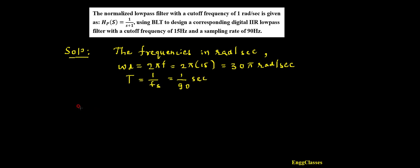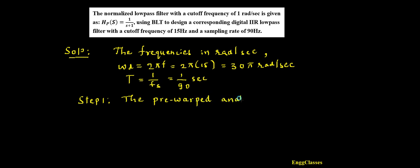We have three steps here while designing a digital IIR filter. Step number 1: we need to calculate the pre-warped analog frequency. The task is to design a digital filter, but we cannot design it in the first go. First we need to design an analog filter, and to do that we need analog specifications. Since the given specifications are with respect to the digital filter, we need to use pre-warped analog frequency specifications.